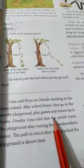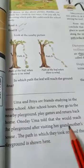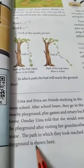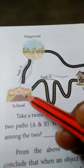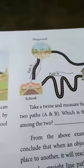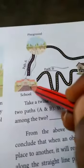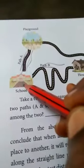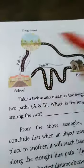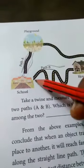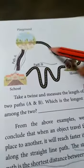One day, Uma told that she would reach the playground after visiting her grandmother's house. The paths they took to reach the playground are shown here. This is the school, this is the playground, and this is grandma's house. Uma's path goes from school to grandmother's house and then to the playground.